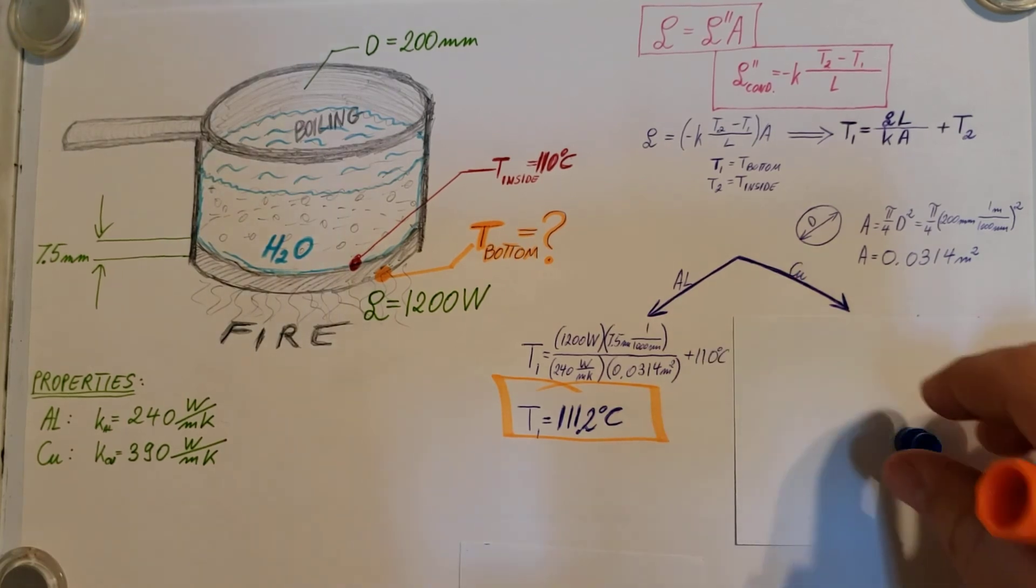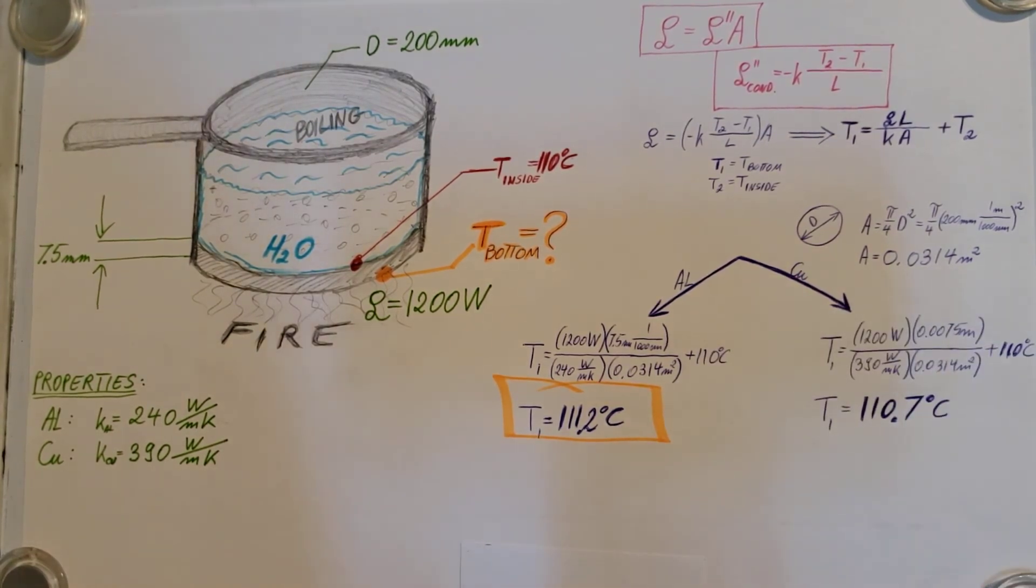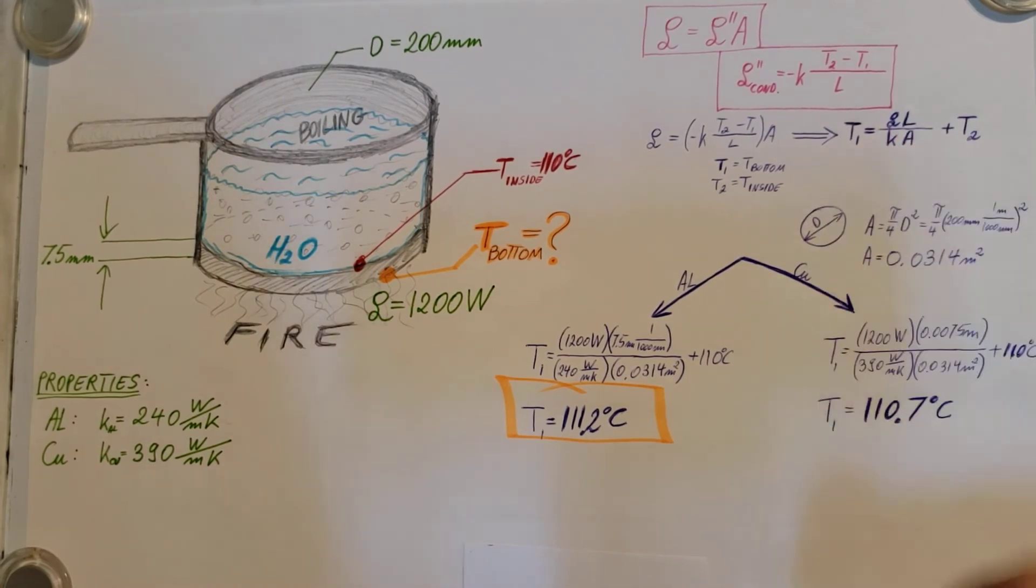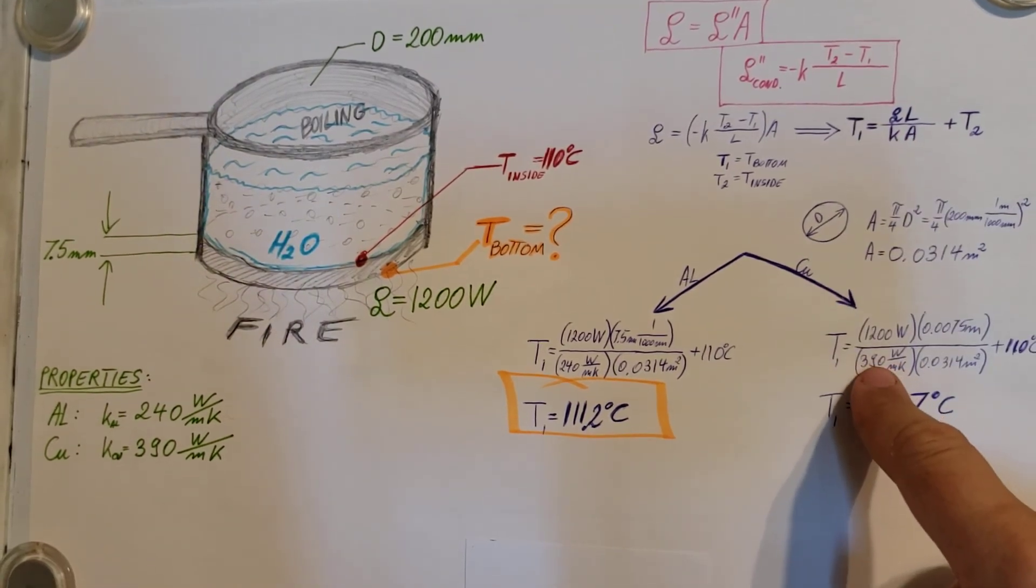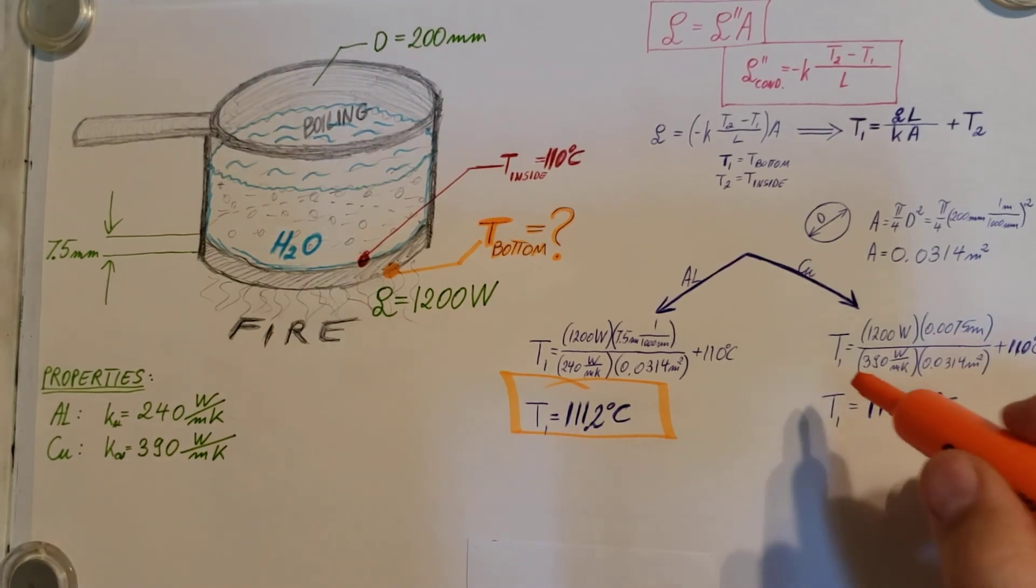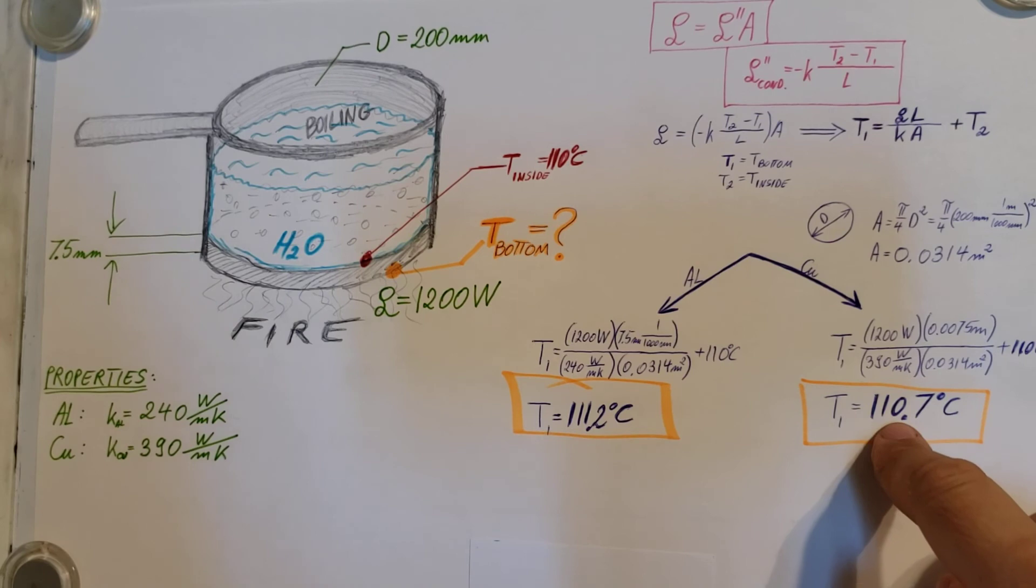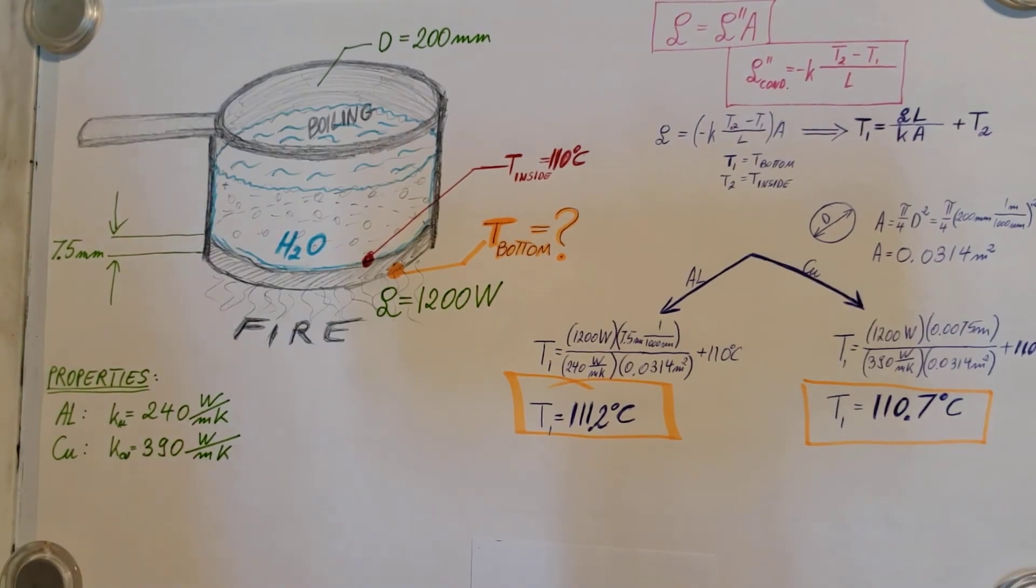Let's do the same for our copper. Again, plug everything in using the exact same formula. Make sure you use the correct properties. After we plugged in, calculate. There it is. Our temperature is 110.7 degrees Celsius.